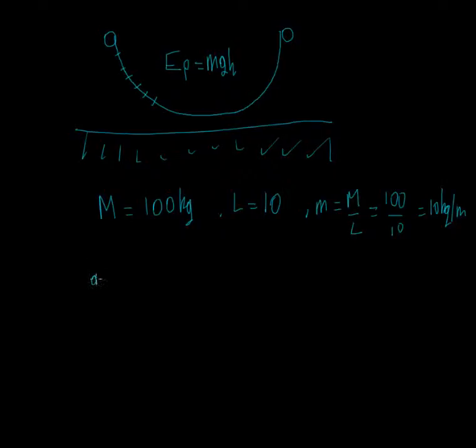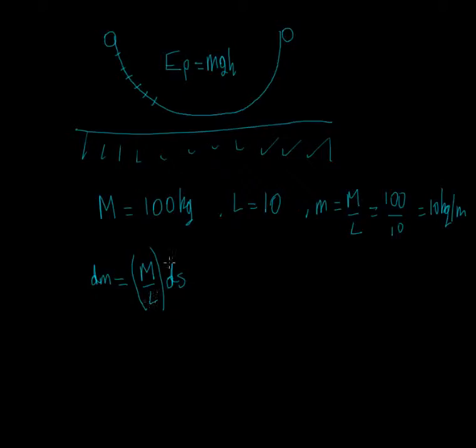Now if we look at that in terms of infinitesimals, we could say that dm, a small element, would equal m upon L ds. If you were to take ds down underneath here we would have dm upon ds which would have the same ratio as m upon L, which would be 10 kilograms per meter.